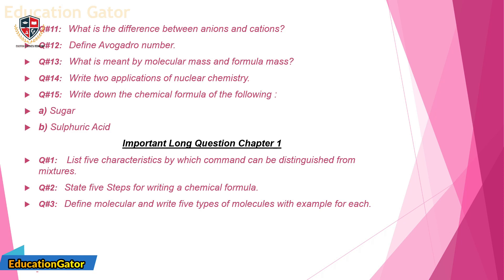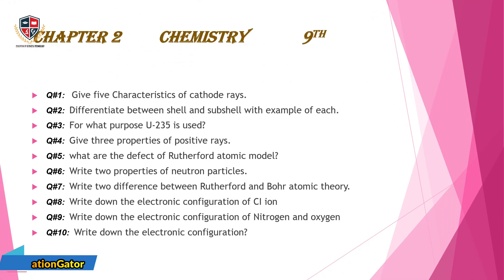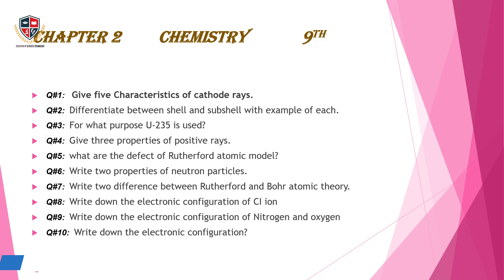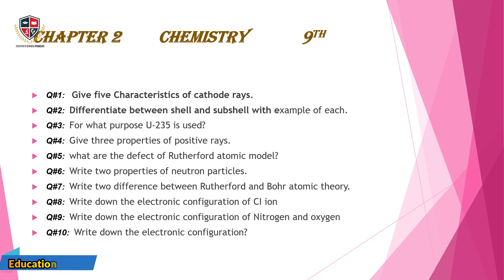Chapter 2, Chemistry 9th. Question 1: Give five characteristics of cathode rays. Question 2: Differentiate between shell and subshell with an example of each. Question 3: For what purpose is U-235 used? Question 4: Give three properties of positive rays.